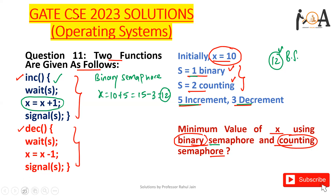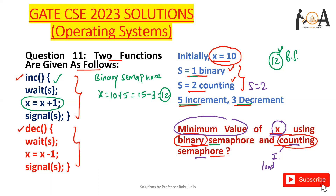Now looking at counting semaphore, there is a bit more logic involved. We need to implement counting semaphore in a manner that gives us the minimum value of x. Here, two threads are present and the semaphore value is 2. The three key steps are: first load the variable, then update the operation (increment or decrement), and then store it. We need to apply this logic to get the minimum value.